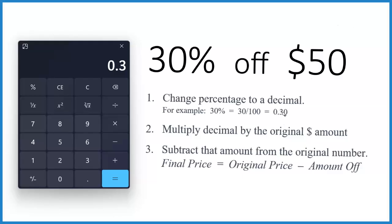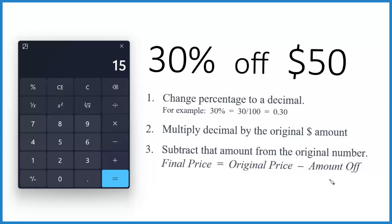That's the same thing as 0.30. Now we're going to multiply that decimal by the original amount, the $50. So times 50, and you end up with 15. That's the amount you save — that's the discount, the amount off.